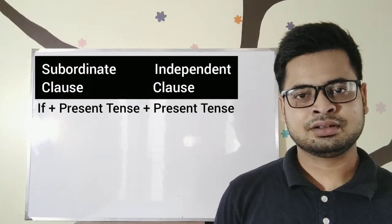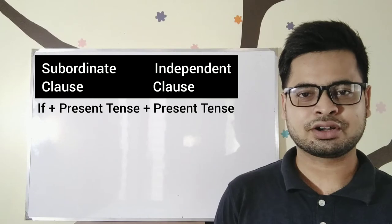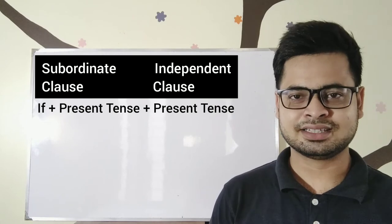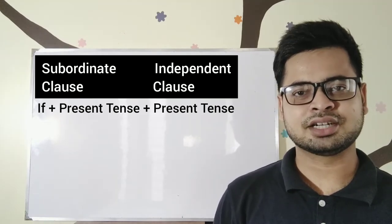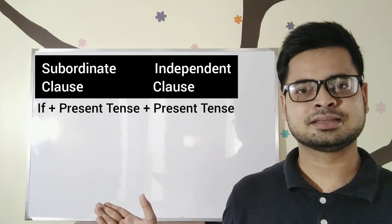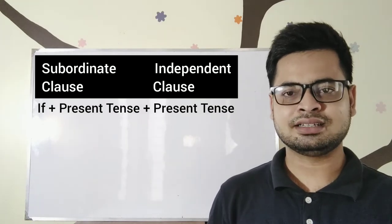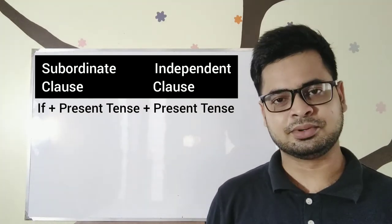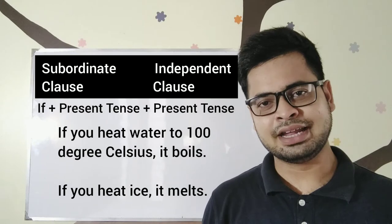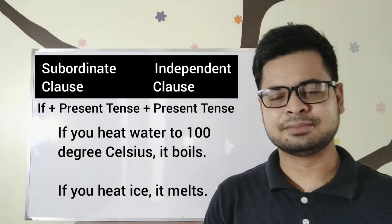Zero conditional sentence. We use a zero conditional sentence to talk about a factual situation on the basis of another related situation in the present. The structure is: if + present + present. That means, if you do something in the present time, you get the result in the present time. For example, if you heat water to 100 degrees Celsius, it boils. If you hit ice, it melts. You can see that both clauses are in present tense.